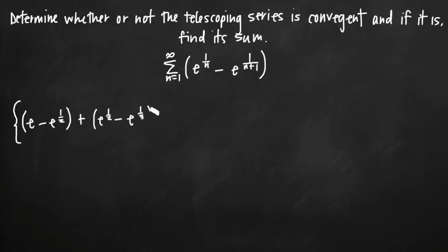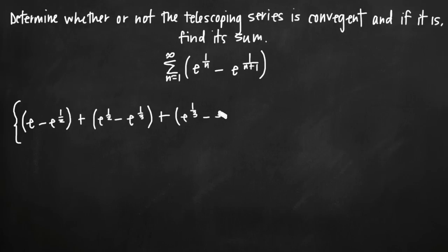When we plug in n equals 3, we get e to the 1 third minus e to the 1 fourth. And you can start to see a pattern.